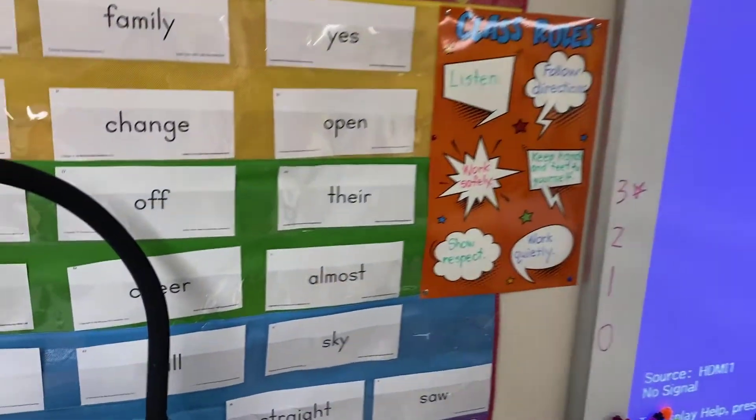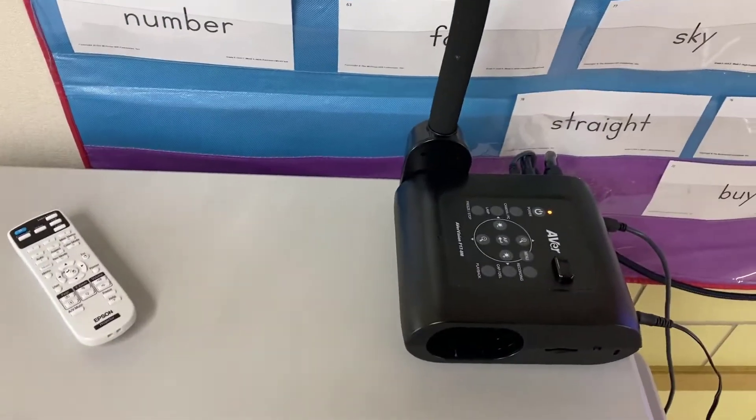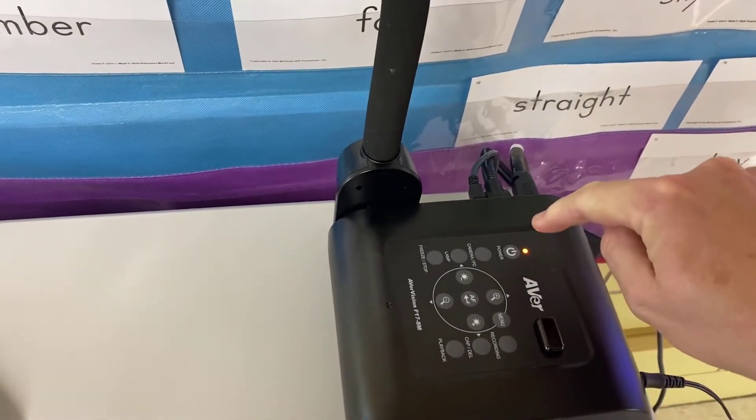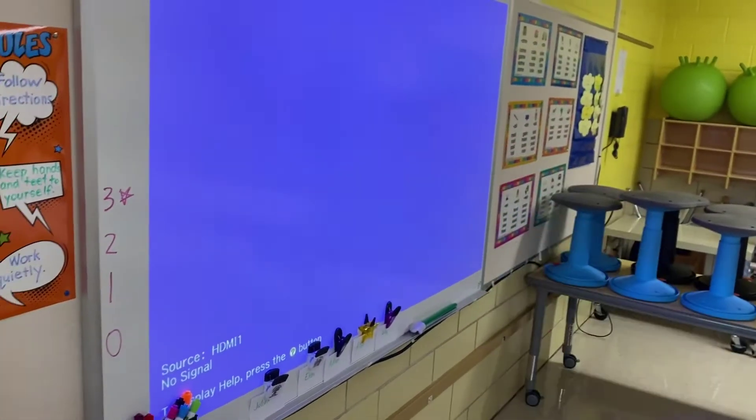The problem is that the document camera is on, but this light, which is normally green when it's on, is orange, and nothing is showing on the screen.